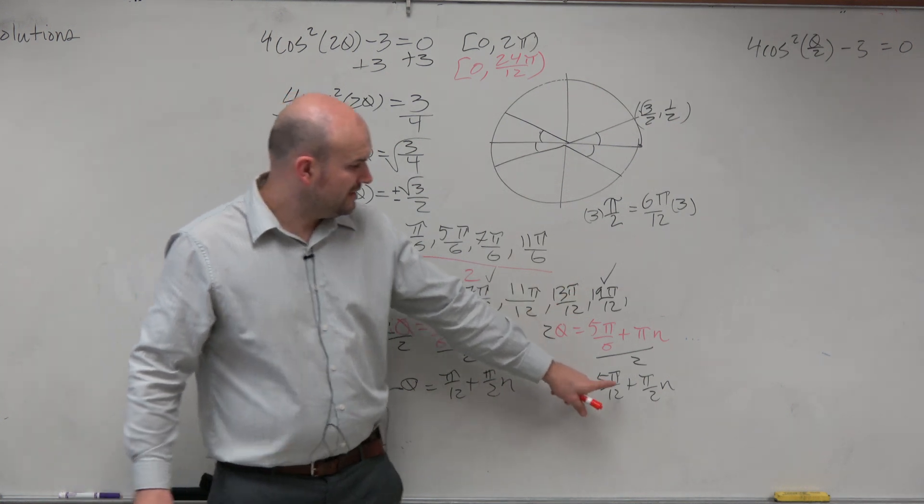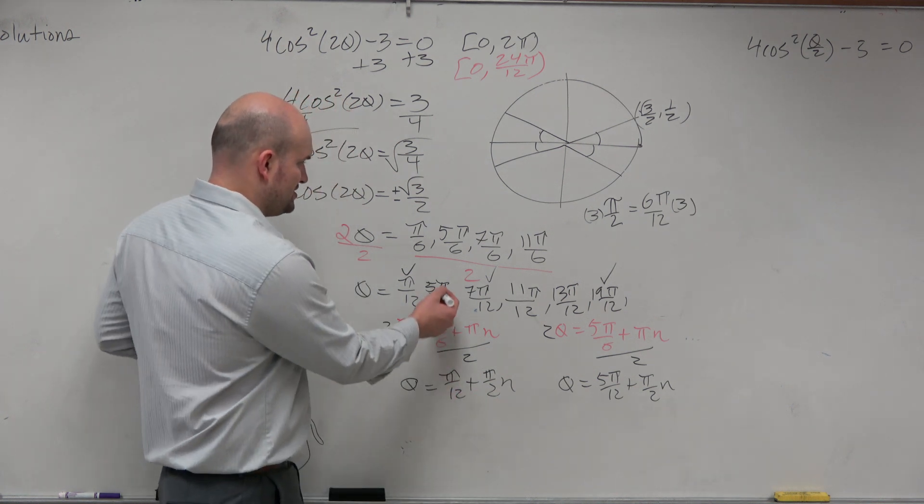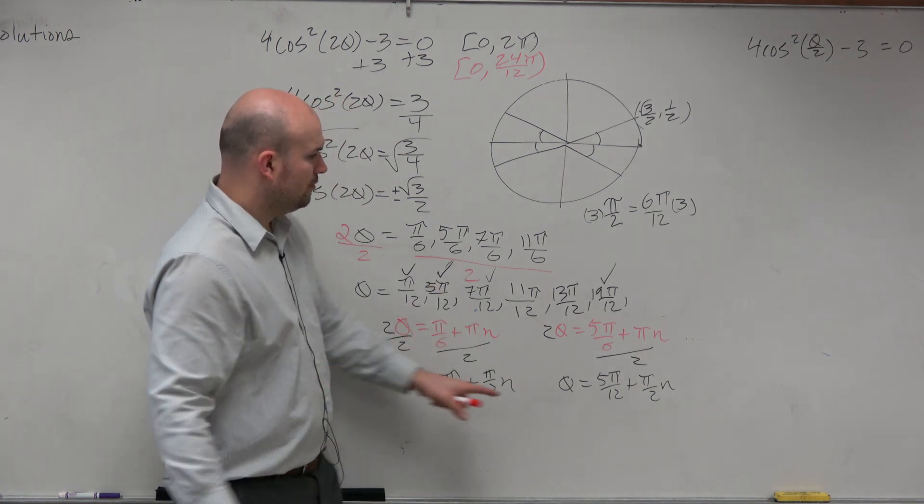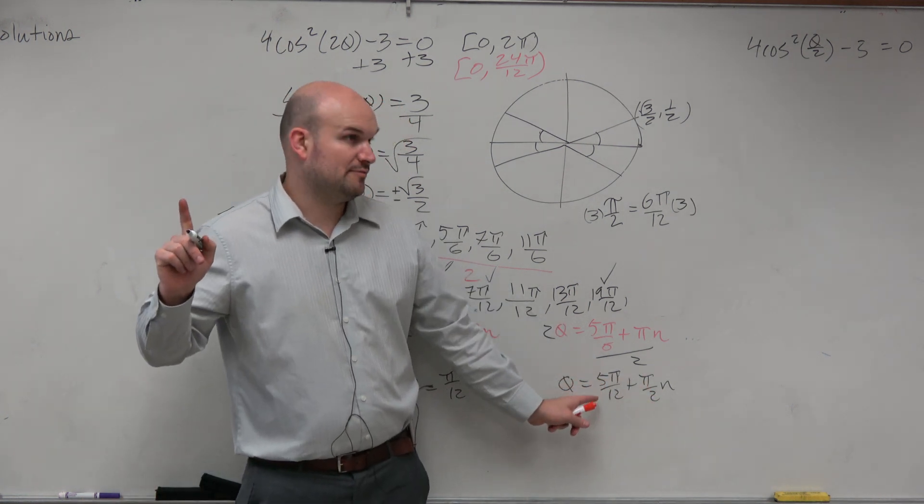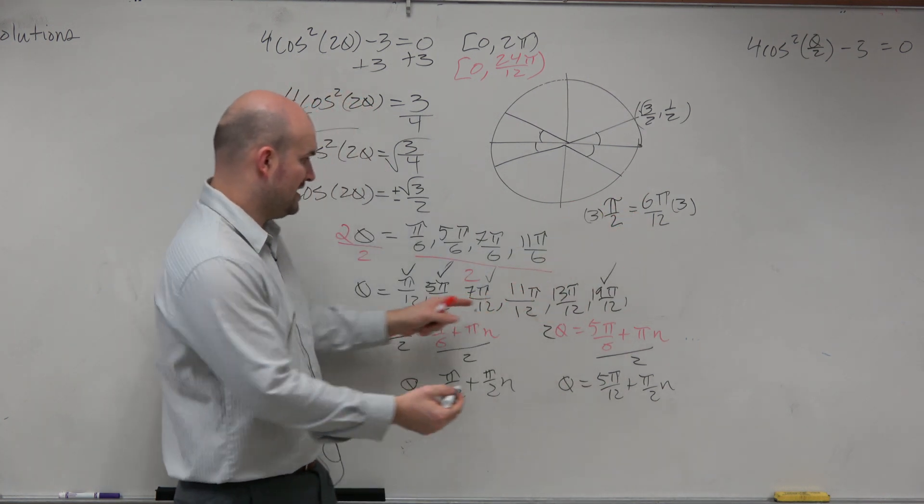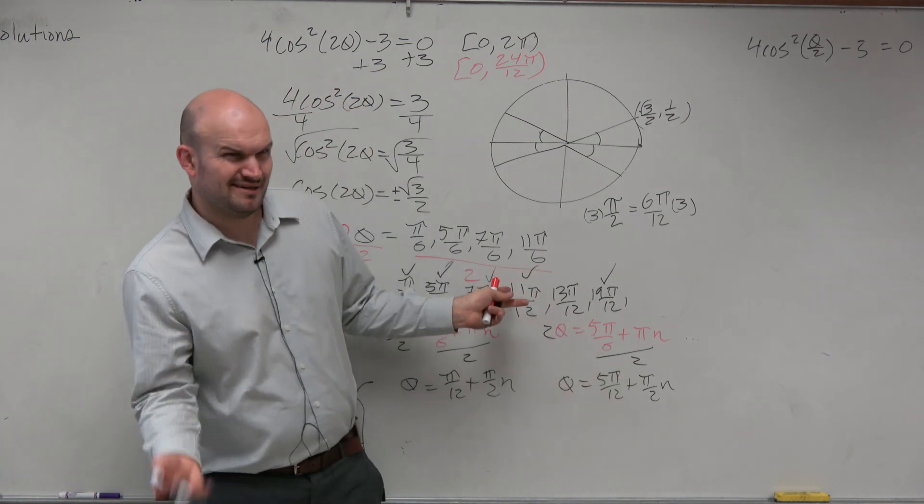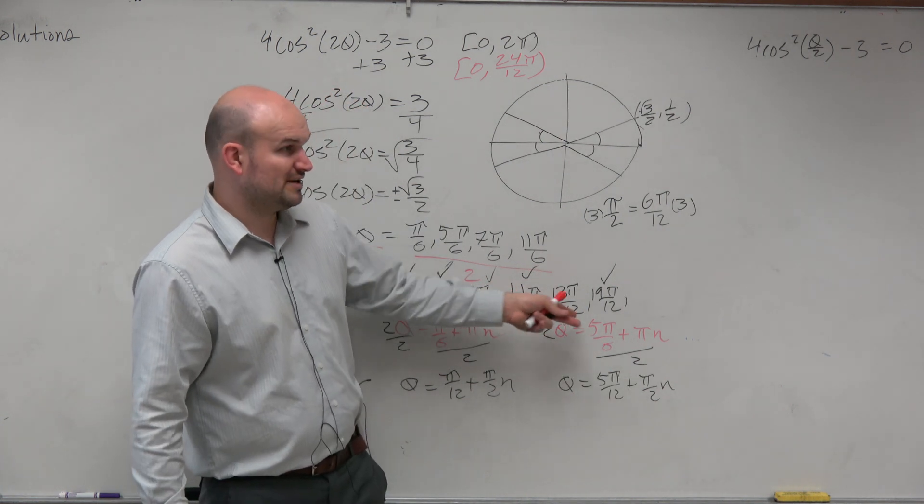If 5 pi over 12, if n is 0, we have 5 pi over 12. Is that an answer choice? Yeah, we're good. What if n was 1? So it'd be 5 pi over 12 plus 6 pi over 12, which is 11 pi over 12. Do we have that? Yep. We're good. Let's add 6 pi over 12 again. 17 pi over 12. Do we have 17 pi over 12? No. That's an answer, though.